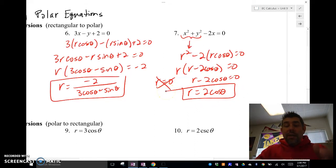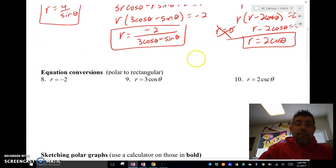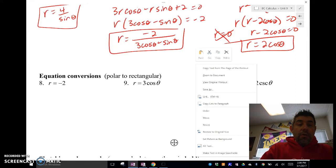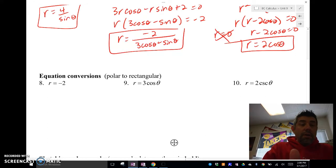So that's converting rectangular to polar. Let's take a look at converting polar to rectangular. So r = -2. Well, if r = -2, we've got to be a little tricky. What I'm going to do is I'm going to square r.